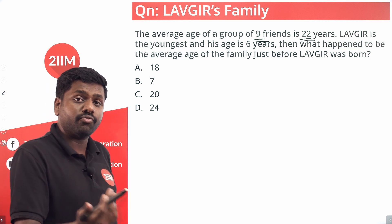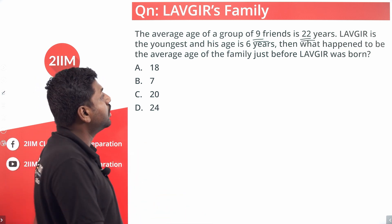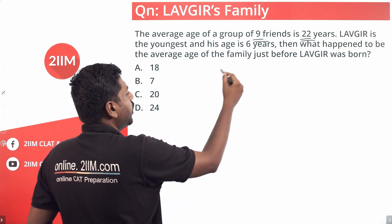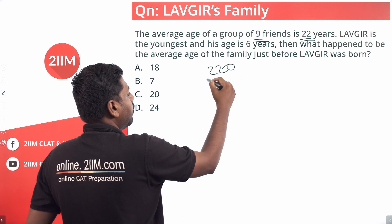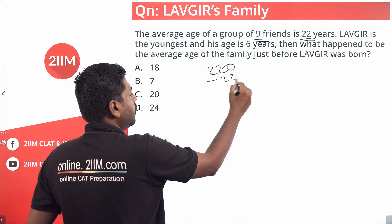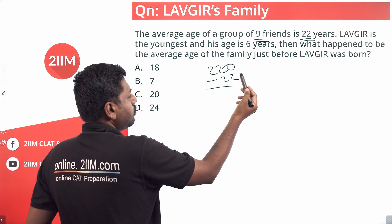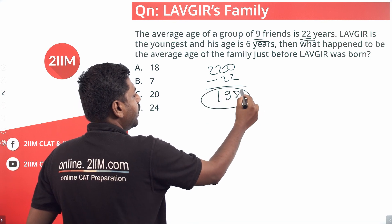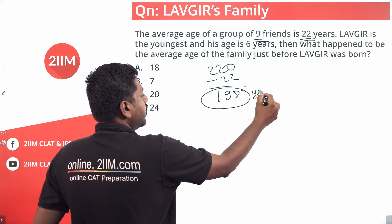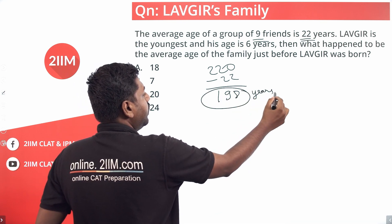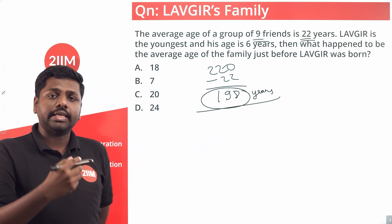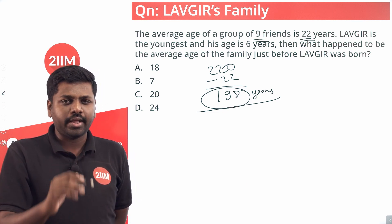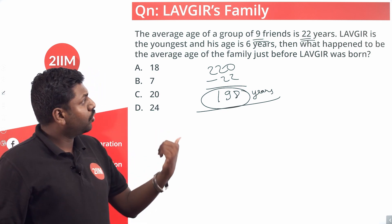9 into 22 is 220 minus 22, which is 198. So 198 years is the current total sum of ages.